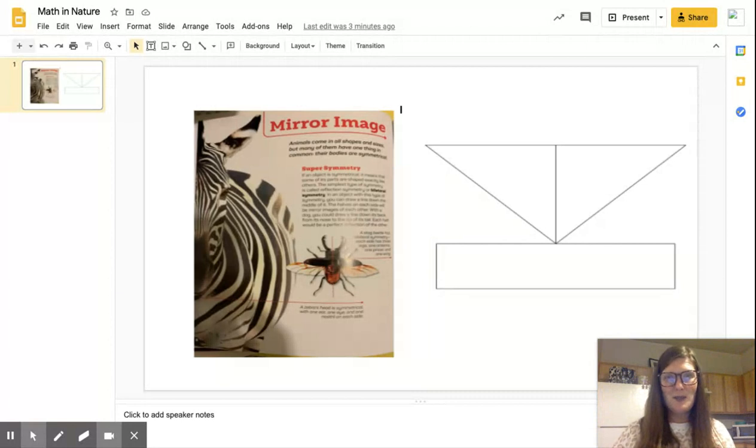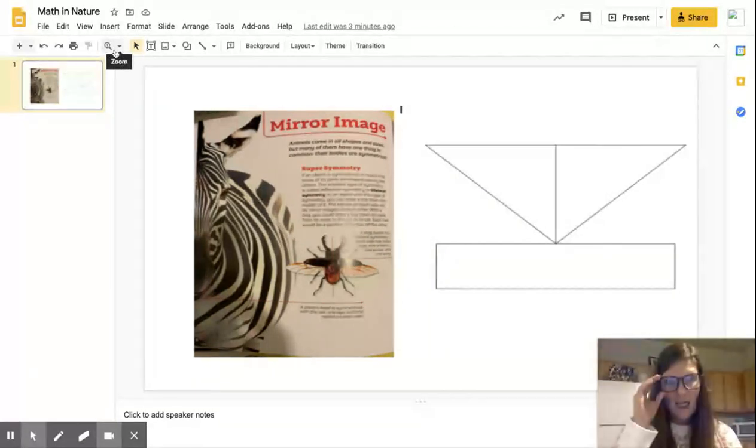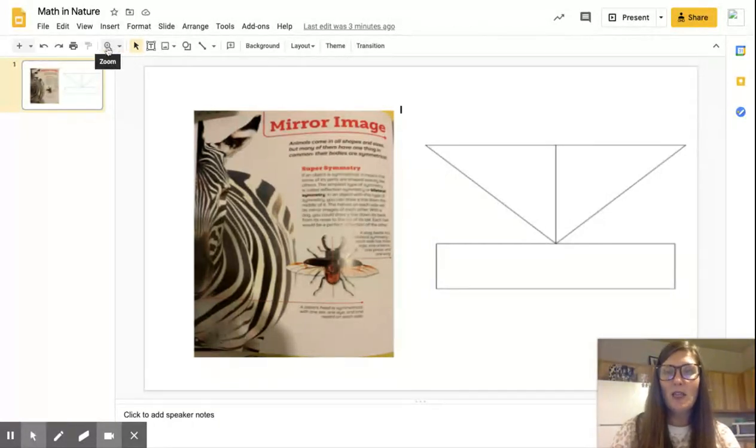When we think about text features, we think about all the things on the page besides just the text. This book has tons of text features in it. There's so many on every page, all kinds of text features. So I found one that I thought was really neat on a page called Mirror Image. I'm going to have to zoom in first because when you can't see something on the page, all you have to do is zoom in. That's the best thing about technology.